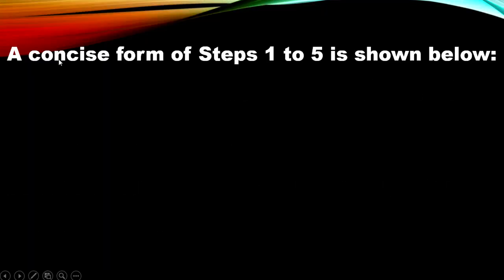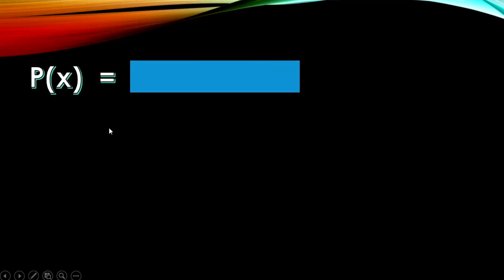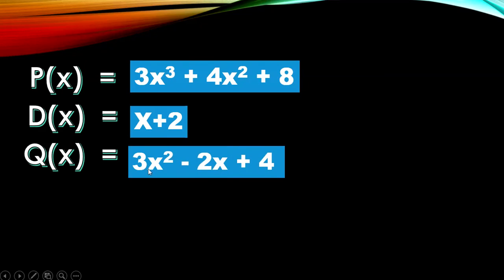A concise summary: the divisor is x + 2, the dividend is 3x³ + 4x² + 8, the quotient is 3x² − 2x + 4, and the remainder is 0. Written in standard form: p(x) = 3x³ + 4x² + 8, d(x) = x + 2, q(x) = 3x² − 2x + 4, and r = 0.